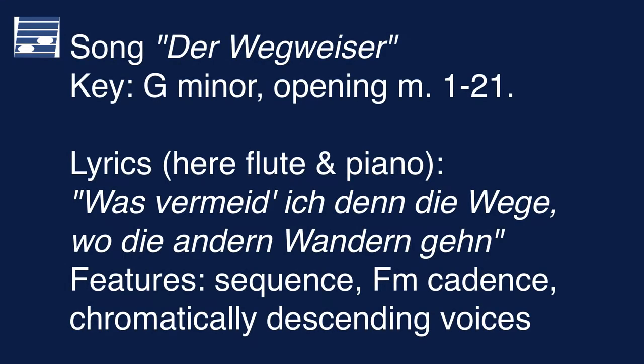The song is in the key of G minor. The opening lyrics are 'Waist vermeid ich denn die Wege wo die anderen wandern gehen?' — or 'Why am I avoiding the roads that other people take?' Let's listen to the opening section in the rendering for flute and piano. Note the special features in the opening verse: sequential treatment of the second phrase ending with a cadence on the lowered 7th degree F minor, before returning to the tonic G minor. Also, there is a lot of chromatic motion in the inner and bass part.